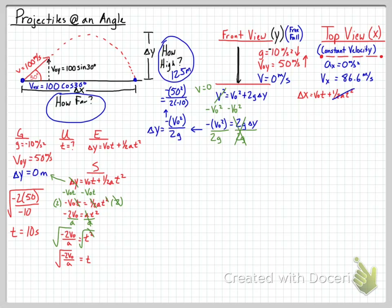Now that we have time and we know the velocity with acceleration equal to zero, we use Δx = v₀t + ½at². The acceleration term drops out, leaving Δx = v₀t = 86.6 × 10 seconds = 866 meters.